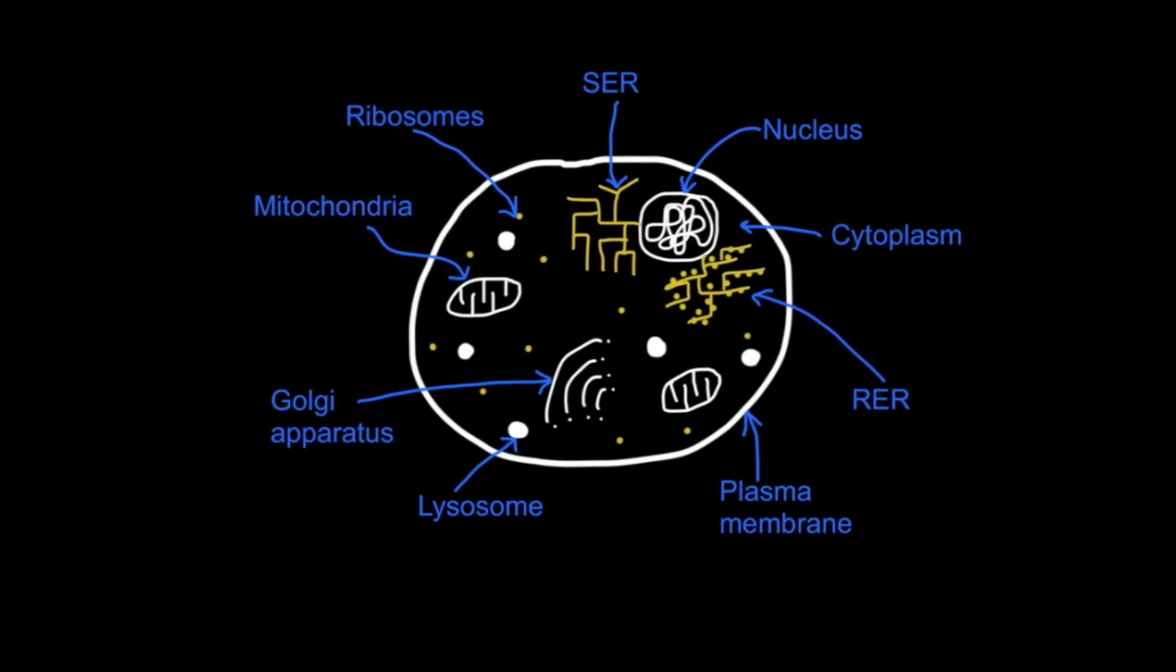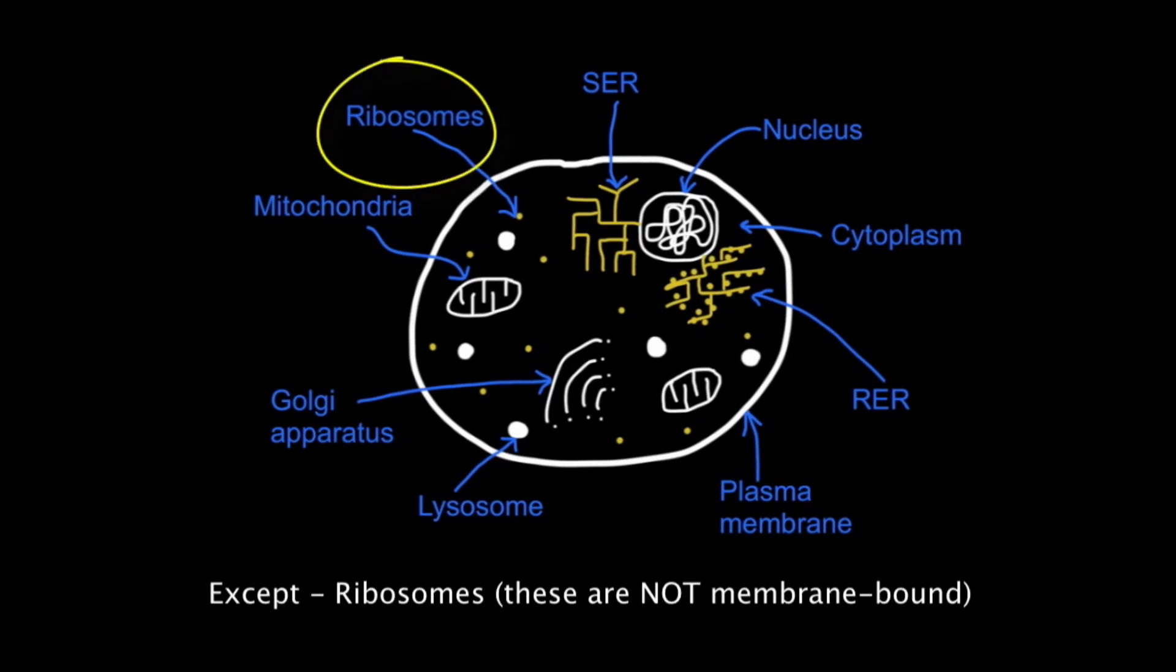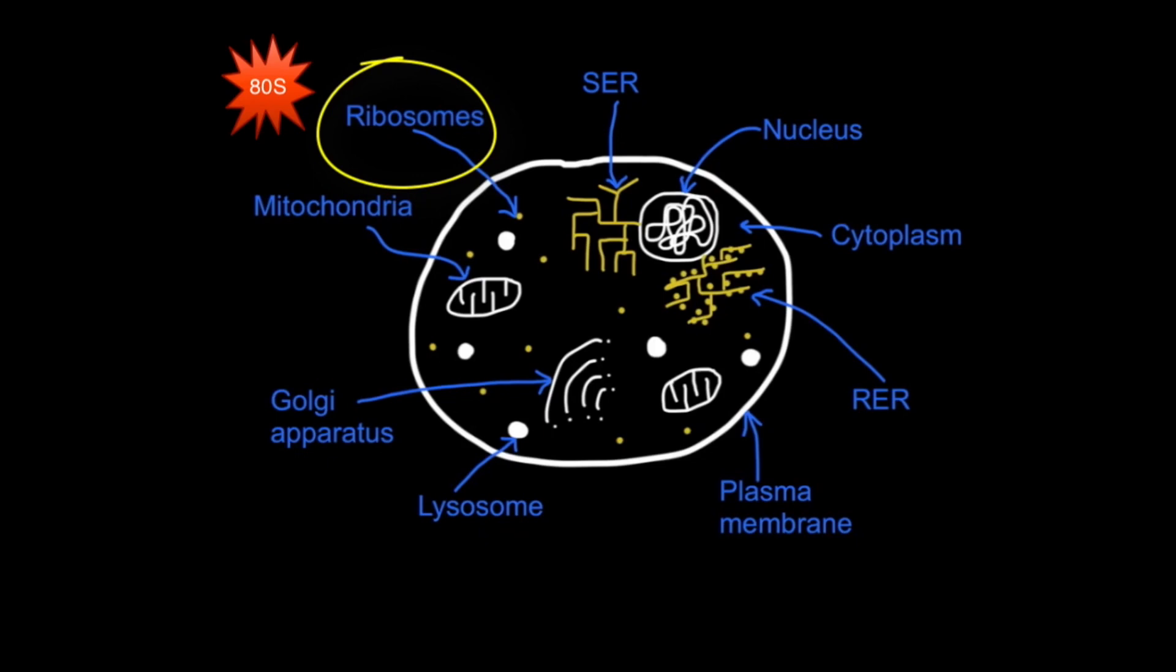The compartmentalization comes from the organelles, the majority of which are membrane-bound. The only exception is ribosomes, which are 80S ribosomes in eukaryotes, as opposed to the 70S ribosomes found in prokaryotic cells.